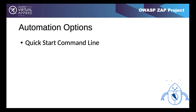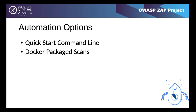There is a command line option, though Simon doesn't recommend it because it's quite simple without many options. The Docker packaged scans are very well used and offer a baseline scan (quick spider plus passive scan, good for CI/CD), an API scan (import your API definition - OpenAPI, SOAP, GraphQL), and a full scan which adds active scanning. These provide simpler but very useful automated functionality.